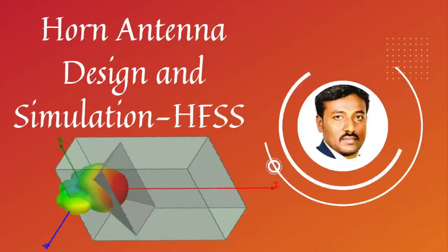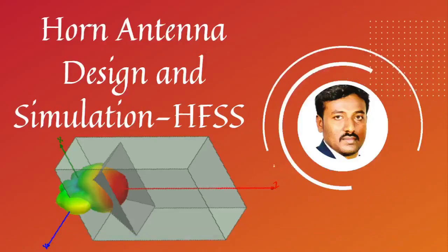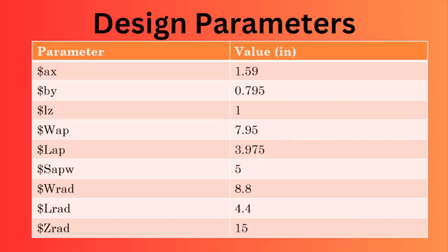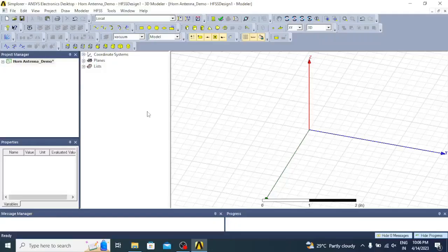Hi friends, welcome to my YouTube channel. In this video I will be discussing how to design a horn antenna using HFSS. These are the calculated design parameters: for the waveguide we have ax, by, and lz; for the aperture we have wap and lap; then the spacing between aperture and waveguide is swap. The dimensions of the radiation box are wrad (width), lrad (length), and zrad (height). Now let us start with the simulation of horn antenna using HFSS.